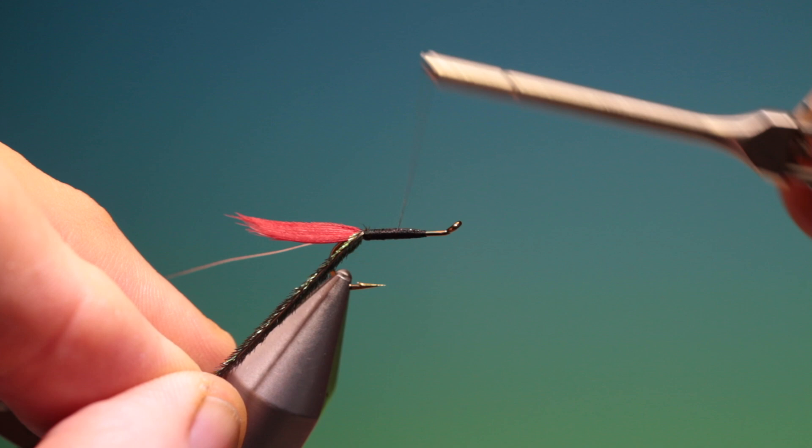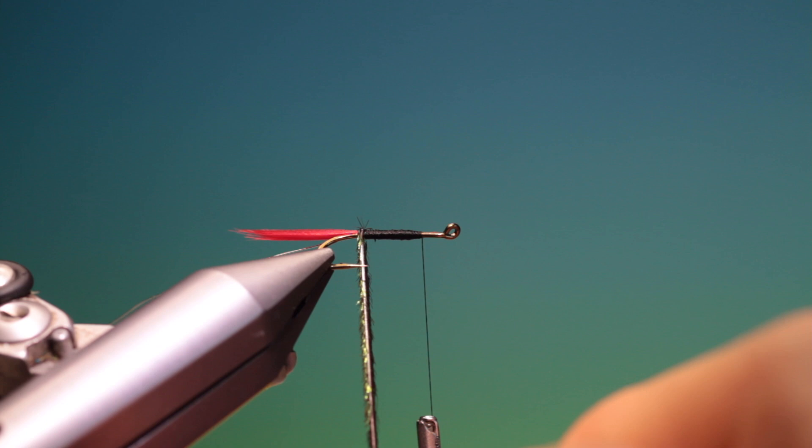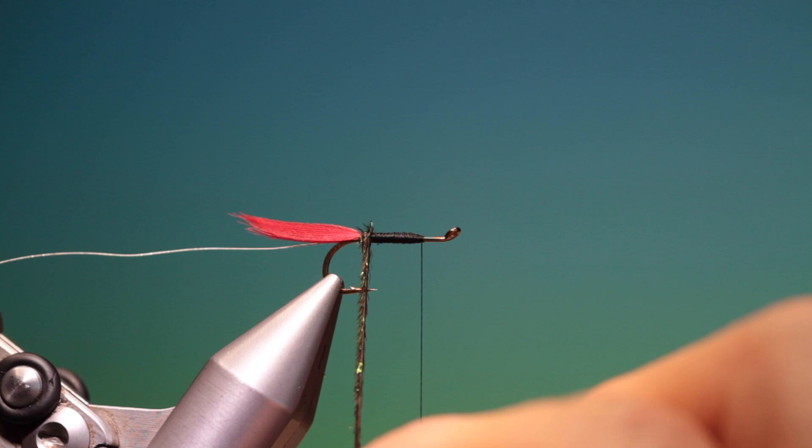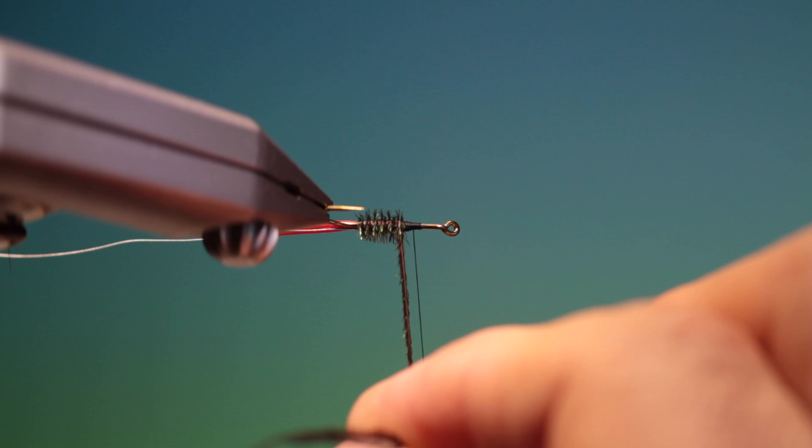So we go forward now. I just want to build that up a little there. There we go, like so. And then, holding the peacock herl, I'll wind the quill forward. You can see I'm getting a quill and a herl body at the same time.